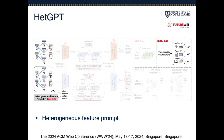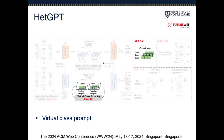We introduce the heterogeneous feature prompts, which are injected into the feature space of the input heterogeneous graph, serving as task-specific augmentations that implicitly tailor the learned node representations from pre-training to downstream tasks. Then, we have the virtual class prompts, which learn the virtual embeddings of the classes so that it can effectively reformulate the node classification task into the contrastive learning task.